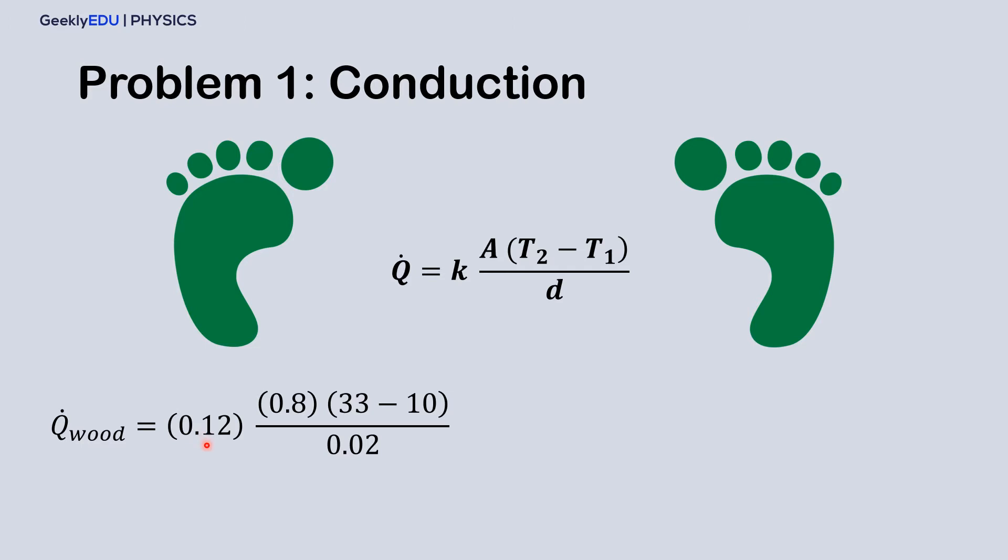we have the thermoconductivity of wood, the area of the foot touching the floor, the difference in temperature, and the thickness, which gives us a heat transfer of 110.4 Joules per second.